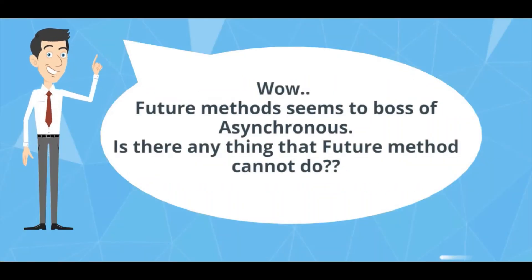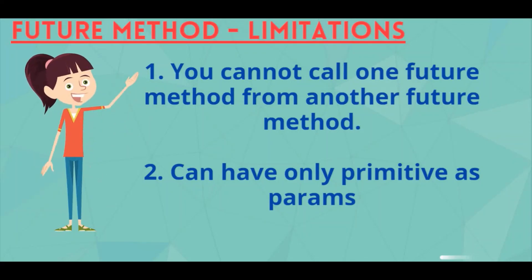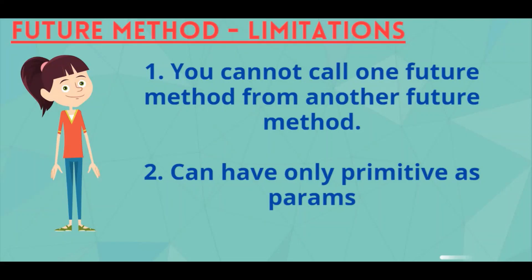Future methods seem very powerful! But yes, there are limitations. One: you cannot call one future method from another future method — which would be asynchronous from asynchronous — and that's not allowed. The second limitation: we can only have primitive types as parameters — integers, booleans, strings, or list of IDs — but not non-primitive types like SObjects or custom types. To bypass these limitations we have other asynchronous processes — which are Queueable, Batch, etc. — and we will see those in the next sessions.